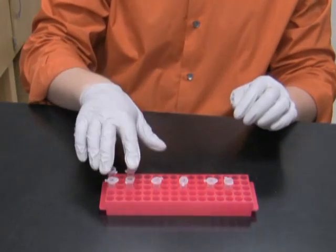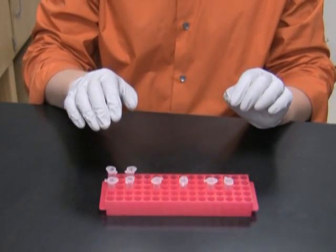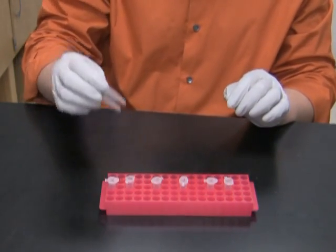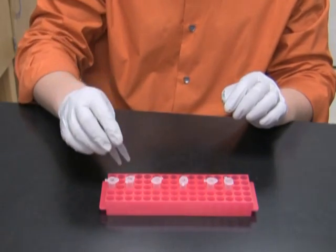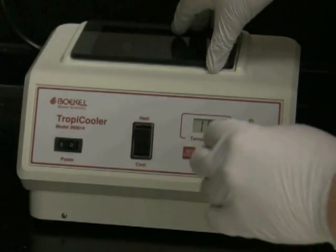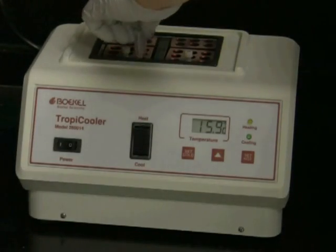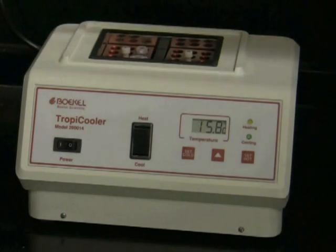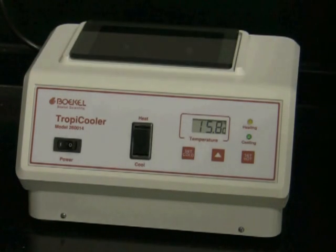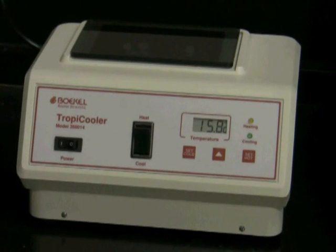I'm going to leave the first set of tubes on the bench for 15 minute room temperature ligation, and I will put the other set of tubes in a 16 degree incubator overnight. If tomorrow I will not get any colonies from the 15 minute ligation, I will repeat the transformation step with the tubes I kept at 16 degrees overnight.